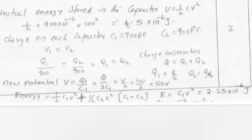Charge on each capacitor: C₁ equals 900 pF, C₂ equals 900 pF. V₁ equals V₂. Q₁ by 900 equals Q₂ by 900, therefore Q₁ equals Q₂. Charge conservation: Q equals Q₁ plus Q₂. Q₁ equals Q by 2, Q₂ equals Q by 2.